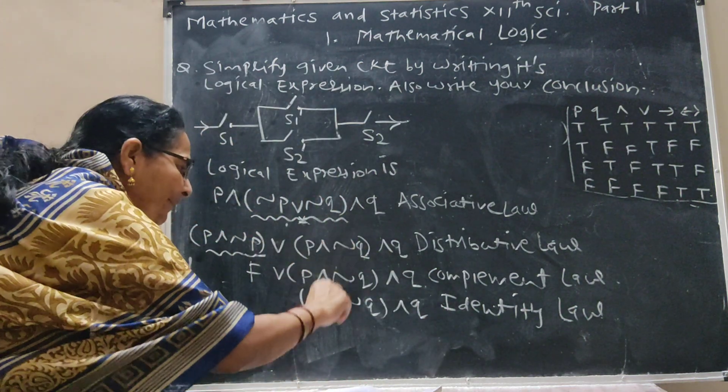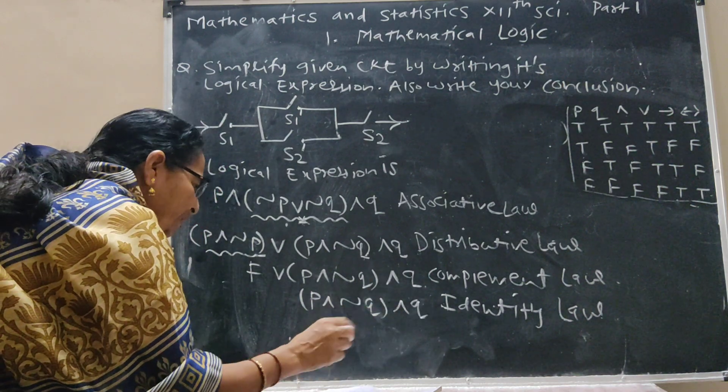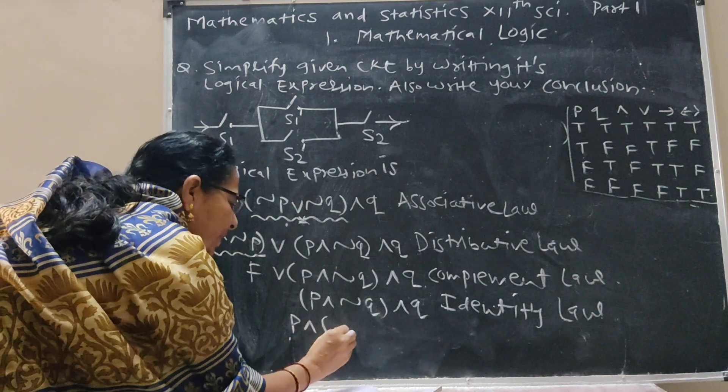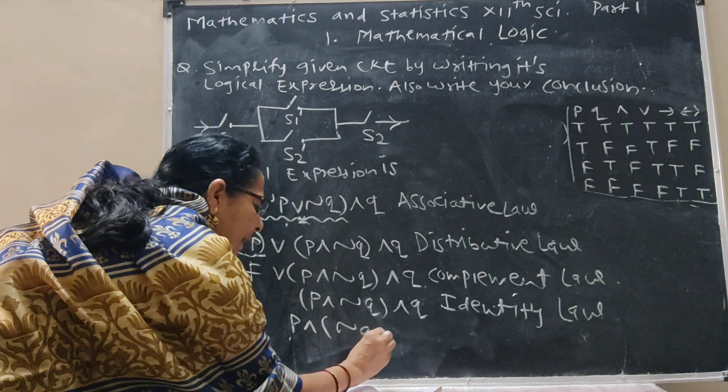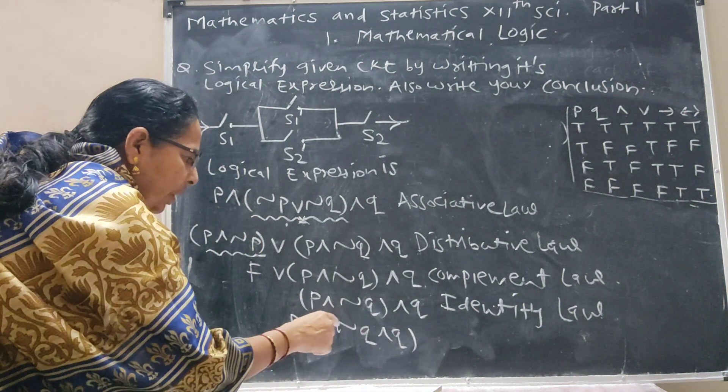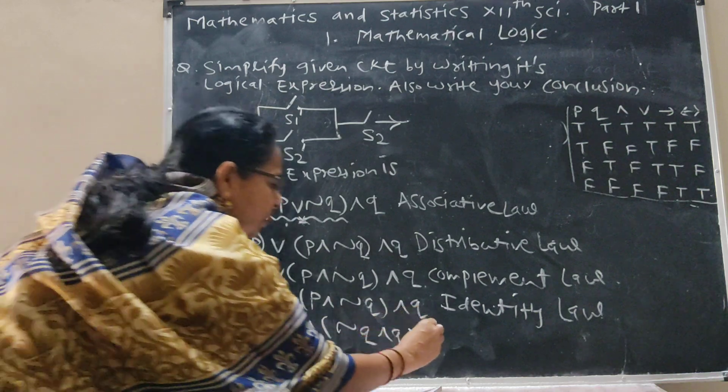Now apply associative law here. P and we write and take negation Q and Q. P and negation Q and Q.